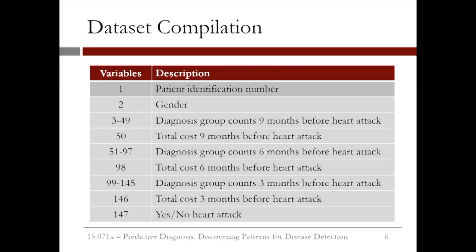How is the data organized? There were 147 variables. Variable 1 is the patient's identification number and variable 2 is the patient's gender. There were variables related to the diagnosis group counts 9, 6, and 3 months before the heart attack target period, and variables related to the total cost 9, 6, and 3 months before the heart attack target period. The final variable 147 includes the classification of whether the event was a heart attack or not.